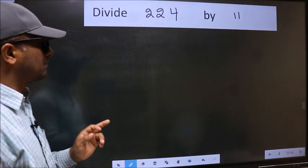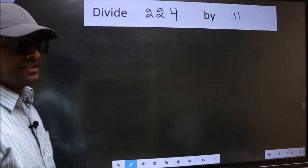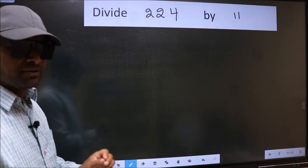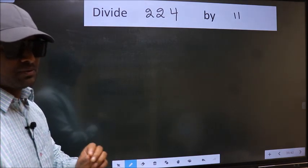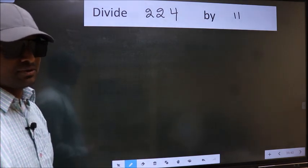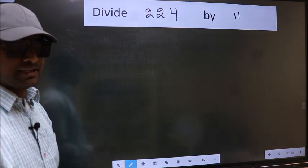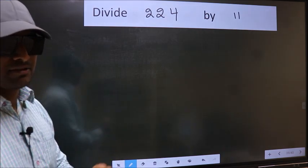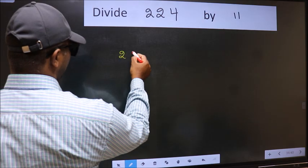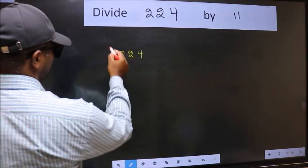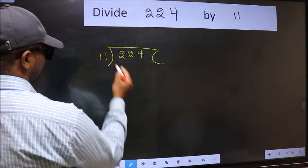Divide 224 by 11. While doing this division, many people make a mistake. I will let you know what that mistake is. But before that, we should frame it in this way: 224 divided by 11.